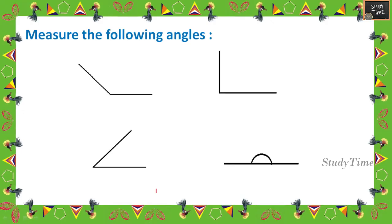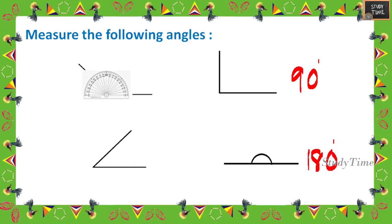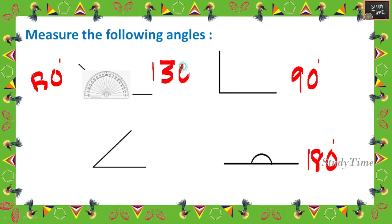Next, measure the angles. This is 90 degrees — you can say that without a protractor. This is 180 degrees. For the other angles you have to use a protractor; approximately this would be 130 degrees. And this one would be approximately 45 degrees.